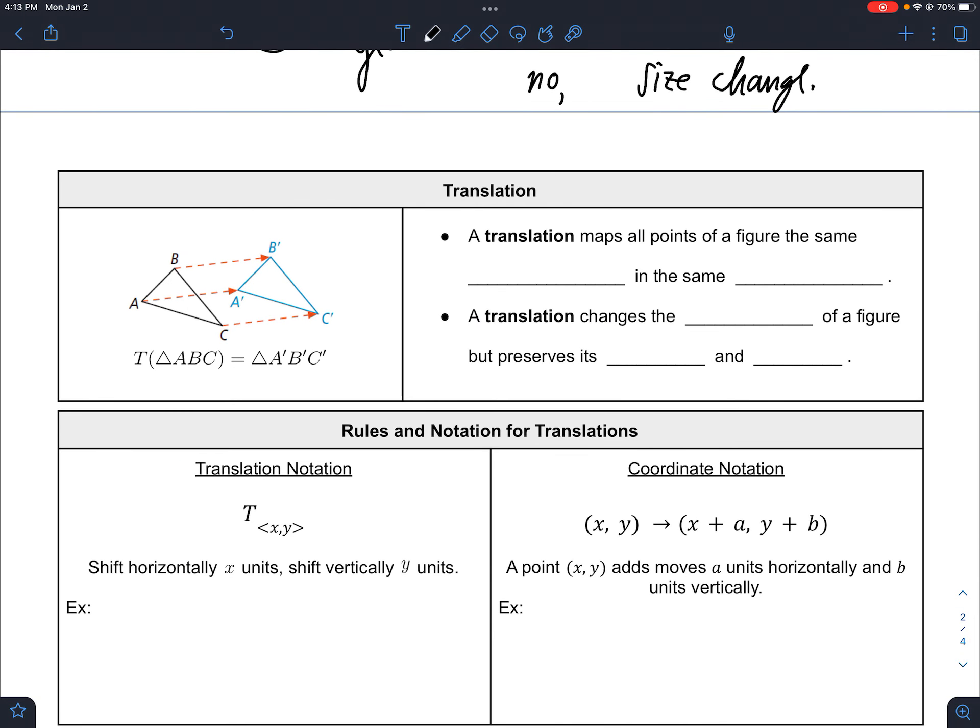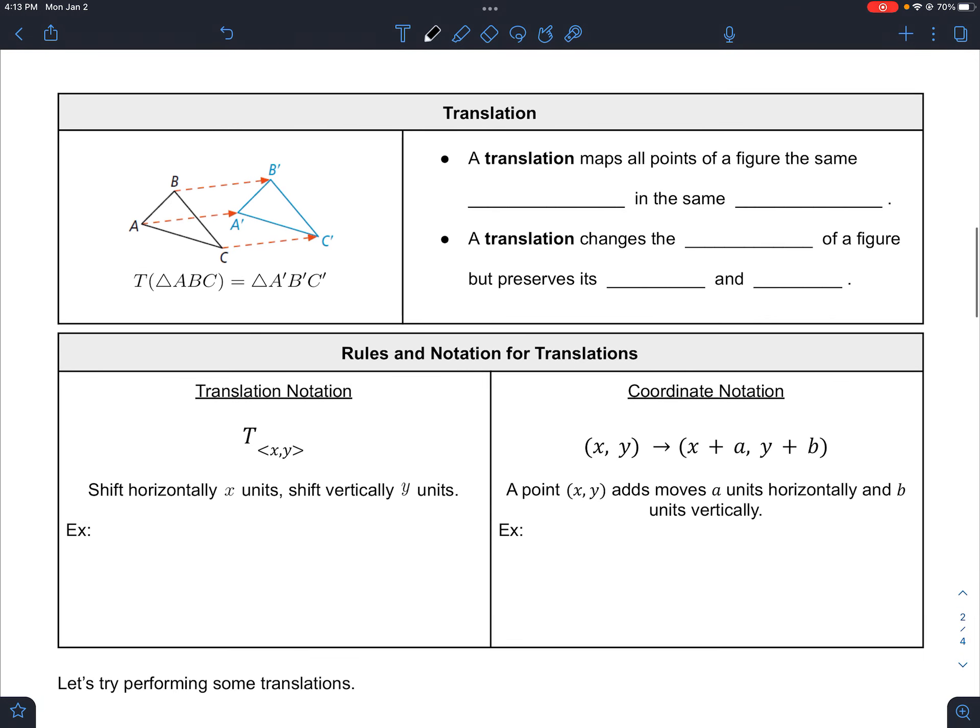For this video, we're going to talk about translations a bit more. A translation maps all the points of a figure the same distance. They slide the same distance in the same direction. Translation changes the position of a figure, but preserves its shape and size.